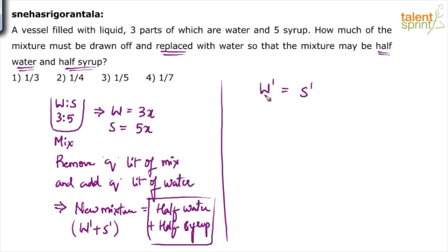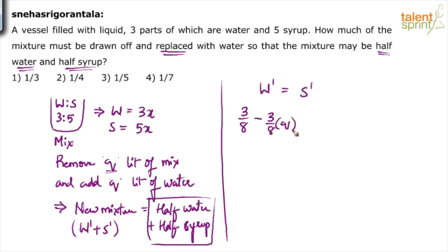How do you arrive at the value of w-dash? Initially, the fraction of water was three out of eight. From that, how much water did we remove? We removed q liters of mixture, so three-eighths of q water came out. But we also added q liters of water. So final water equals initial water minus (3/8 × q) plus q.